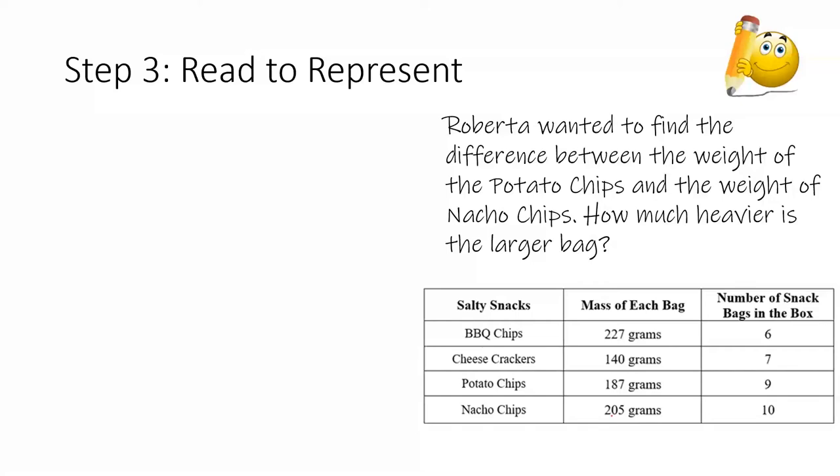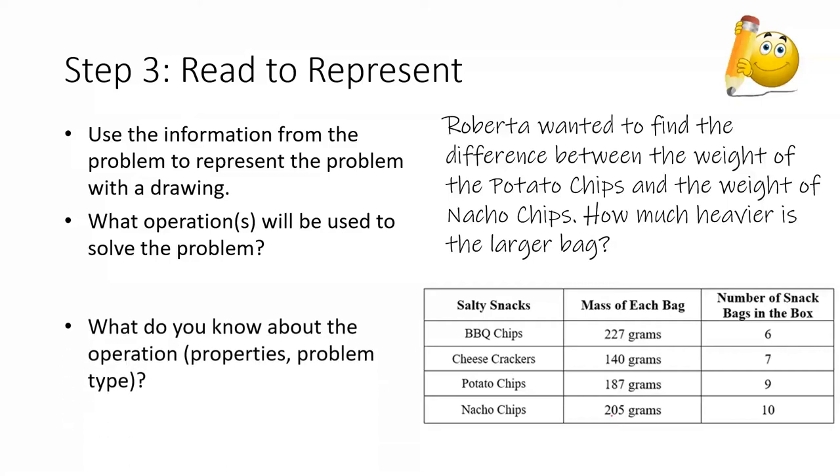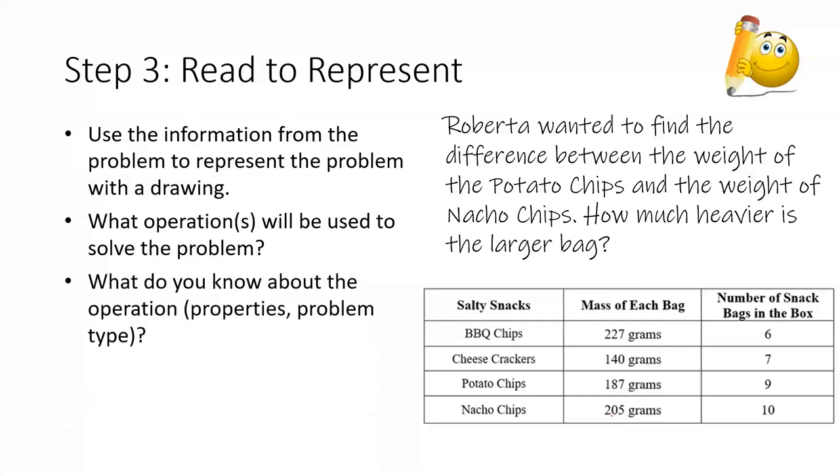Okay, now we're going to read the problem one more time. And again, the third time we read is read to represent. Let's think about the information from the problem to represent it with a drawing. What operations do we think we may need to use to solve the problem? What do we know about these operations? Are there different properties or is there a specific problem type we might need to use?